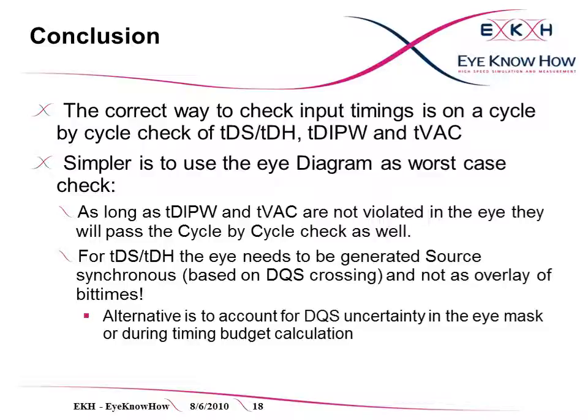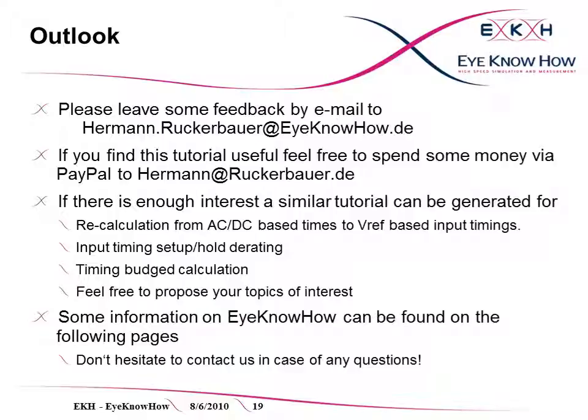Now let's come to the conclusion. The really correct way to check if a system violates the input timings of the DRAMs is a cycle-by-cycle calculation. Simpler might be a worst-case check by an eye diagram. Any feedback, best by email, is welcome.